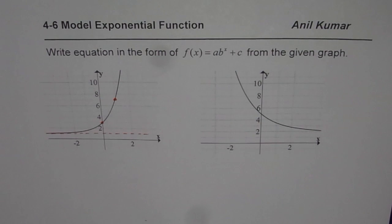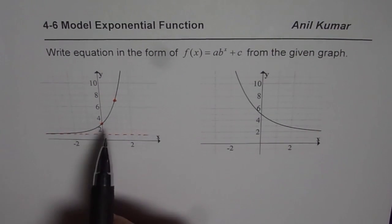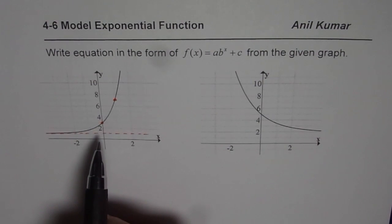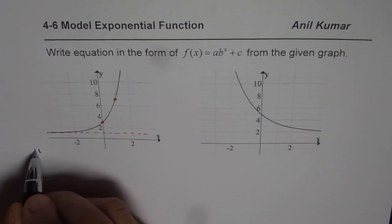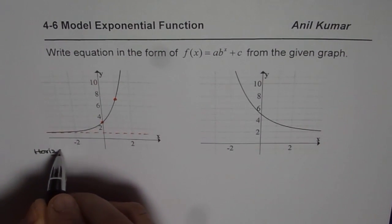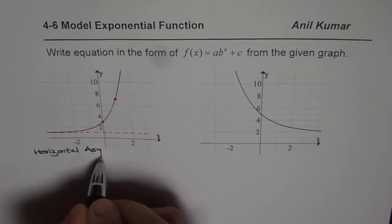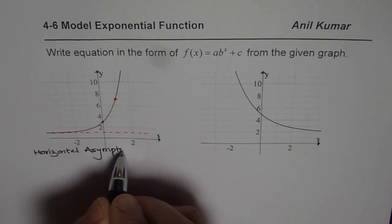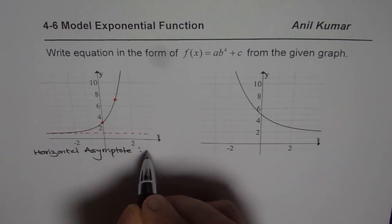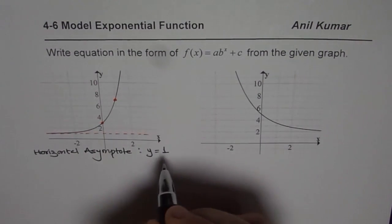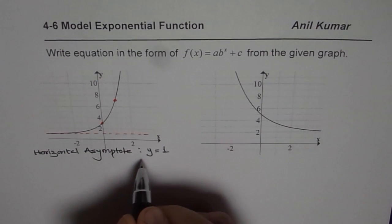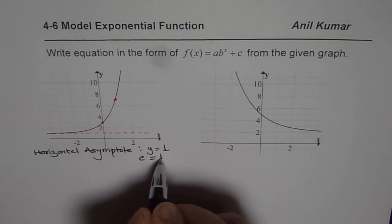I appreciate if you could pause now and write down your equation, then check with my answer. First, have a good look at the graph and identify the critical points. What we identified was the horizontal asymptote, and that is y = 1. Horizontal asymptote means c for us, so c equals 1.